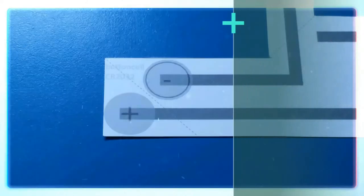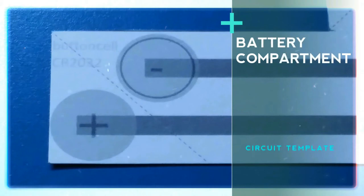The first section of the circuit template is the battery compartment. We will connect either a button cell or a 9-volt battery here to power up our Circuit Craft project.